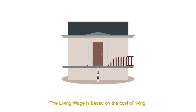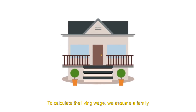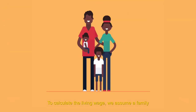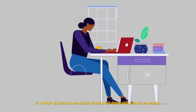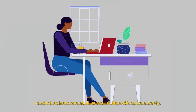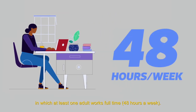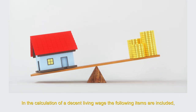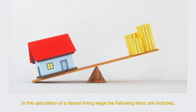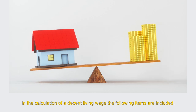The living wage is based on the cost of living. To calculate the living wage, we assume a family in which at least one adult works full-time, 48 hours a week. In the calculation of a decent living wage, the following items are included.